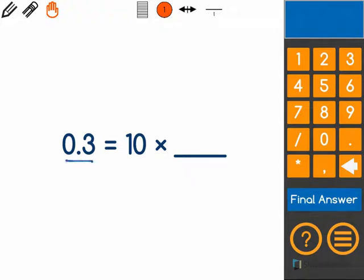The question we have here is 0.3 is equal to 10 times blank, and we're trying to find out what number goes in that blank.